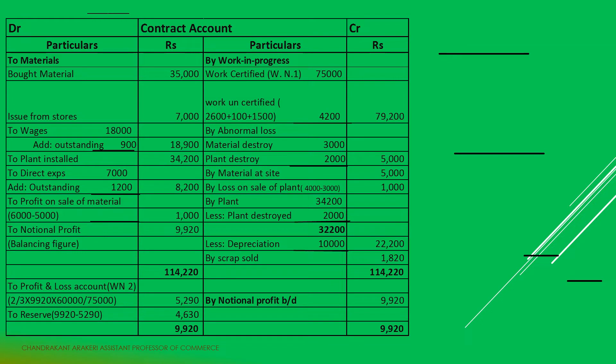Next, plant Rs. 34,200 — the plant installed for this contract is Rs. 34,200. Next, direct expenses: the problem gives Rs. 7,000. There is an outstanding amount of Rs. 1,200. So total direct expenses is Rs. 8,200.